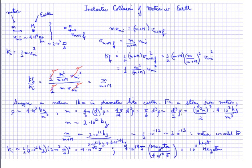Putting the numbers in, with d equal to 1 kilometer (1,000 meters), we get 1,000 meters cubed divided by 2 times the density of 4 times 10 to the 3rd kilograms per cubic meter, which gives a meteor mass of 2 times 10 to the 12th kilograms. The ratio of final to initial kinetic energy is then 2 times 10 to the 12th over 2 times 10 to the 12th plus 6 times 10 to the 24th kilograms — the latter being the mass of the Earth. The denominator is essentially just the mass of the Earth.